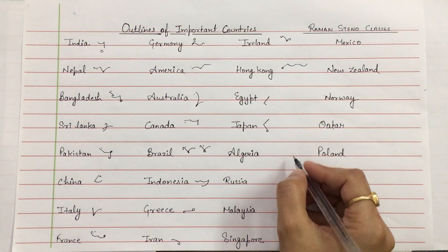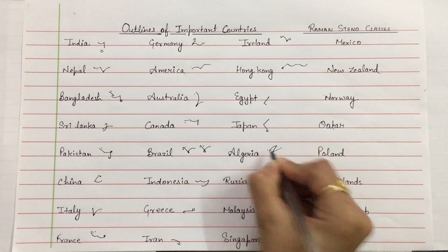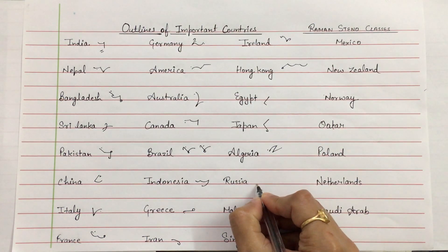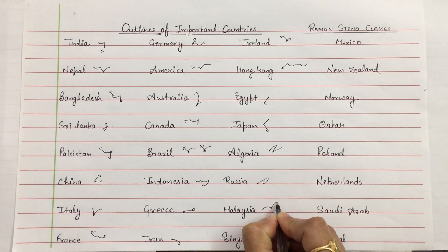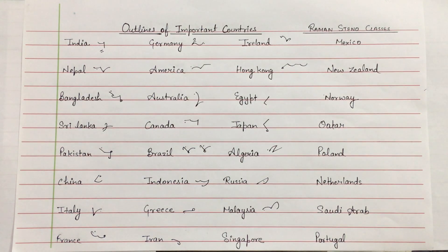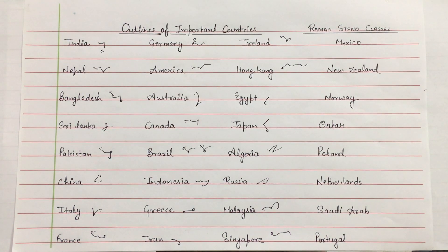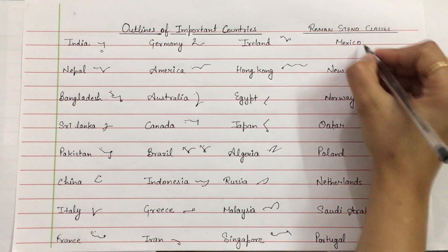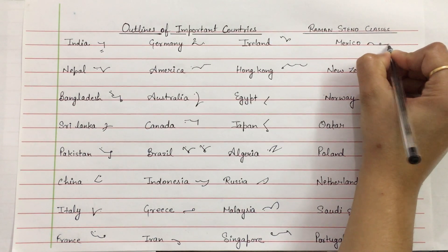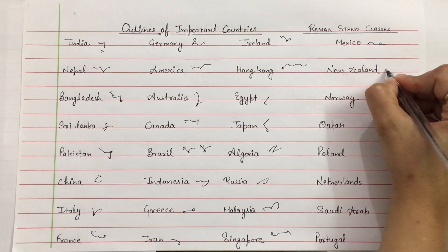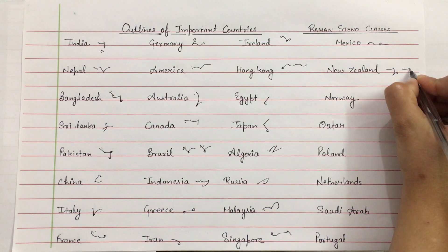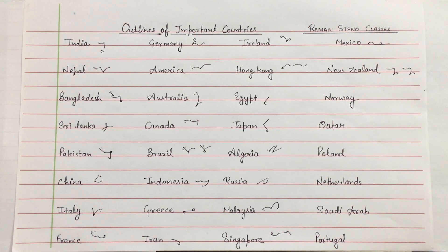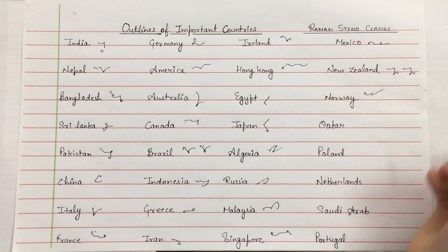Algeria. Then Russia. Malaysia. Singapore. Mexico. New Zealand — here we will use the stroke Z used with N, that dark stroke kind. Then Norway — above the line.